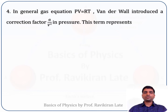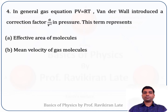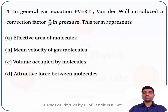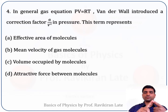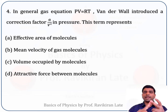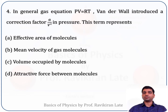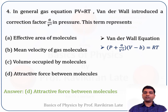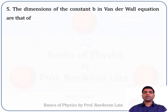The next question: in the general gas equation pv = rt, Van der Waals introduced a correction factor a/v² in pressure. This term represents — option A: effective area of the molecule, option B: mean velocity of molecules, option C: volume occupied by molecules, option D: attractive force between molecules. In the Van der Waals equation, the correction term a/v² in pressure is due to the attractive force between the molecules. So the correct answer is option D: attractive force between molecules.